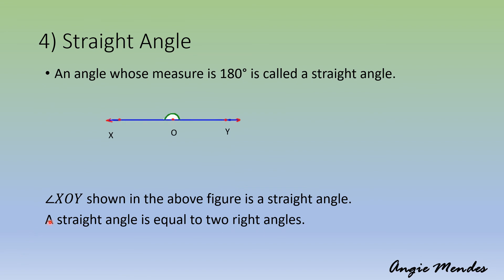What is a straight angle? An angle whose measure is 180 degrees is called a straight angle. It is equal to two right angles.